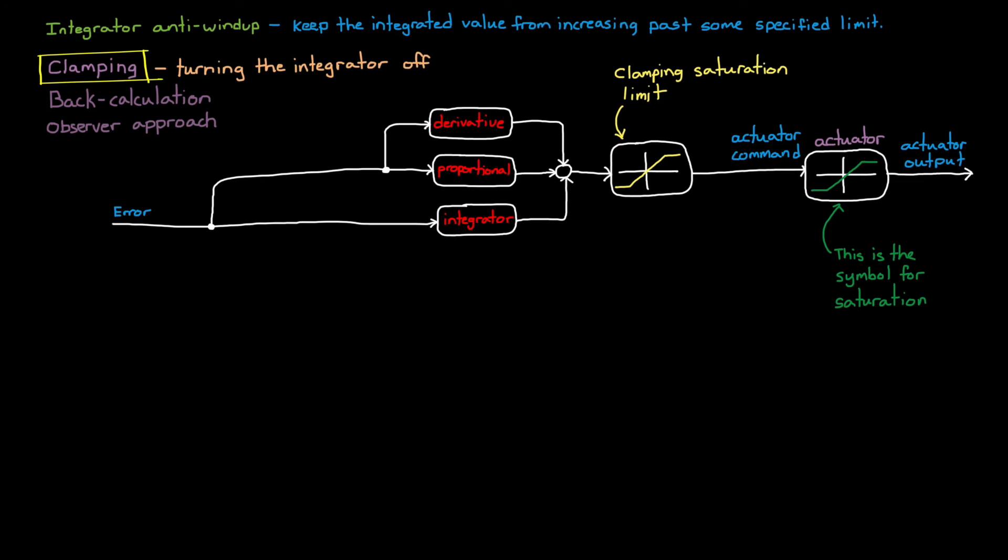Now we know the actuator command won't be too high, but we haven't removed the windup problem just yet. The clamping method has two separate checks that it's doing. The first is to compare the output of the PID controller before and after the saturation check. If the values are equal, then no saturation took place, and this block outputs a zero. If they're not equal, then we are in saturation, and the block outputs a one.